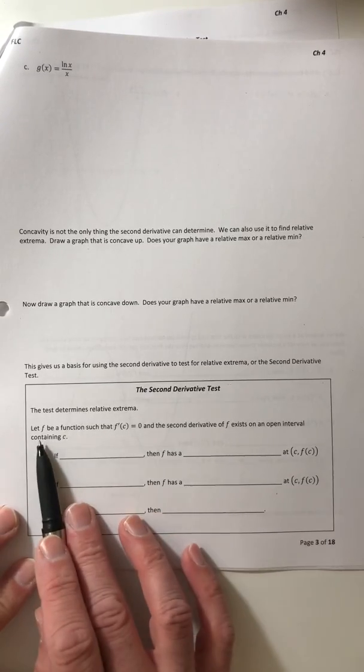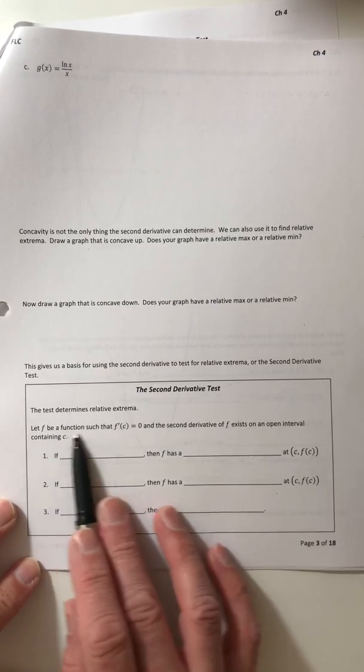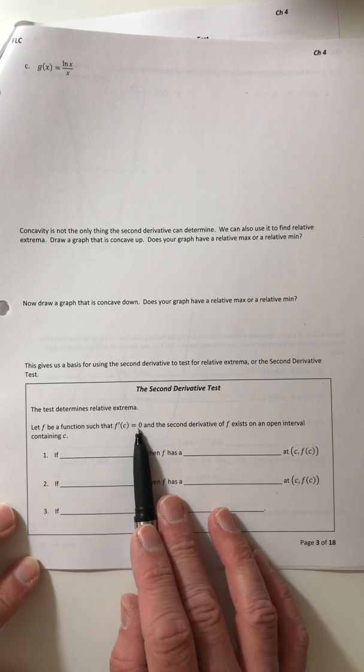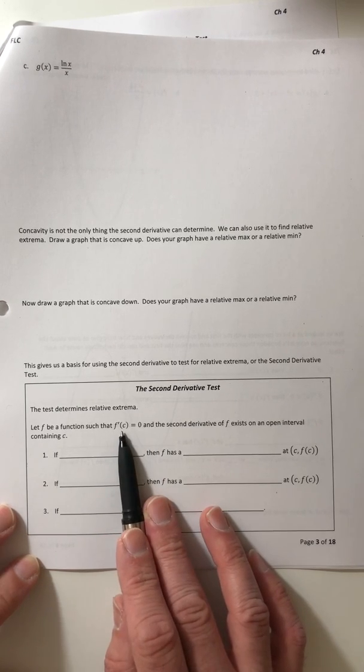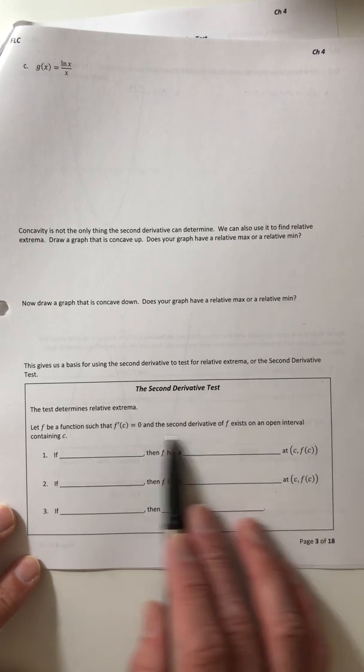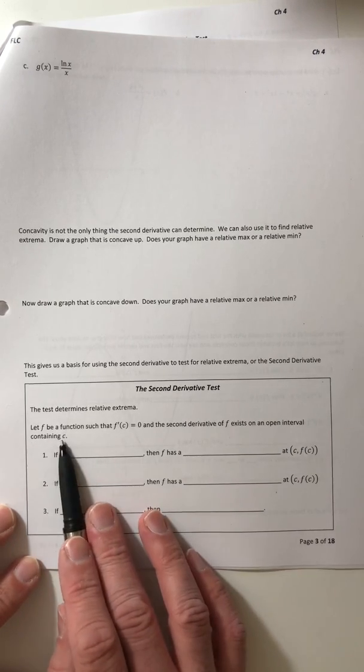Okay, so let's see what it says. Let F be a function such that the first derivative at C is zero, which means C is a critical number, and the second derivative of F exists on an open interval containing that C.